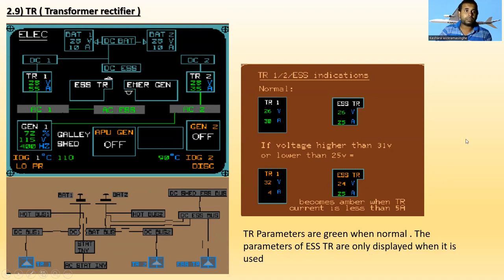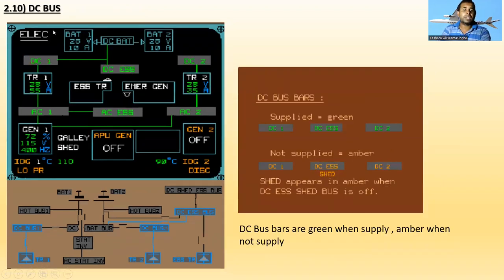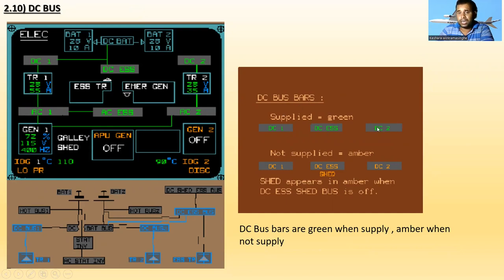Next is the DC bus. TR1 supplies DC Bus 1, TR2 supplies DC Bus 2, and the Essential TR supplies the DC Essential Bus. When the DC bus is supplying, it shows green. When not supplied, it becomes amber — DC1 shed, DC Essential shed, DC2 shed. Shed appears amber when the DC essential shed bus is off. DC bus bars are green when supplying and amber when not supplying.